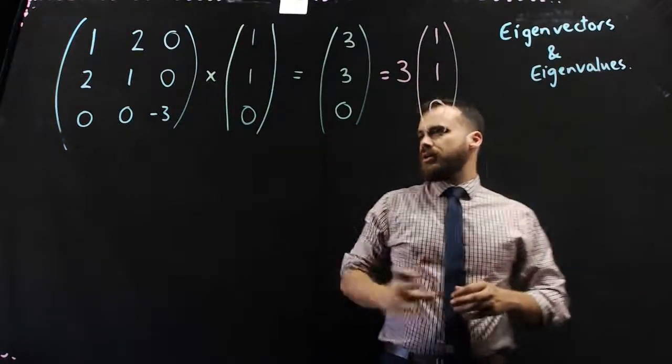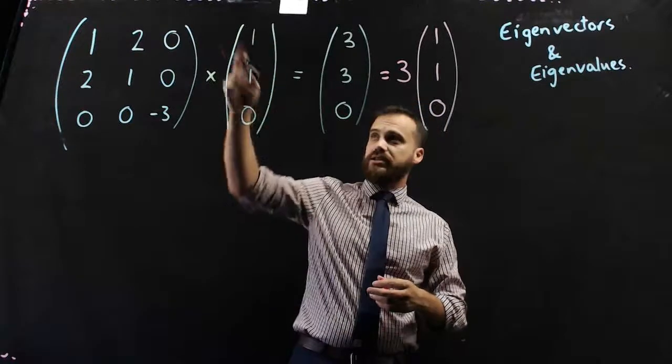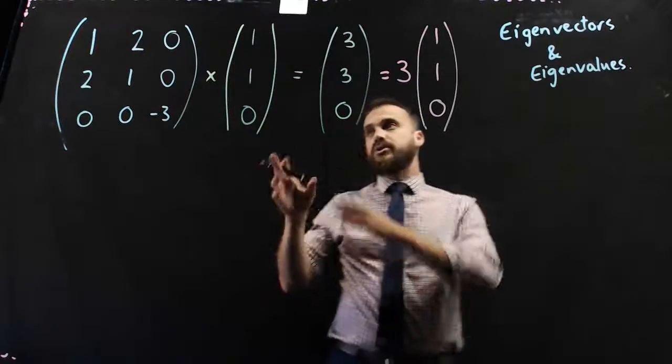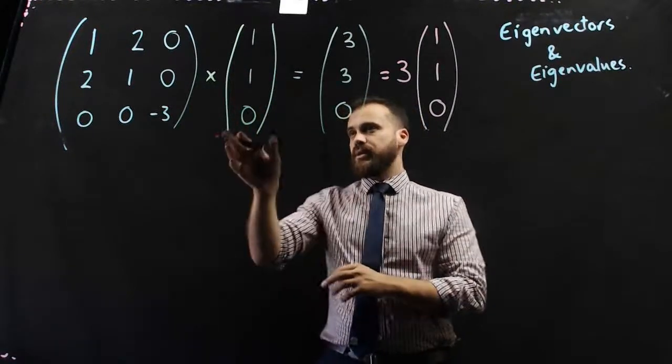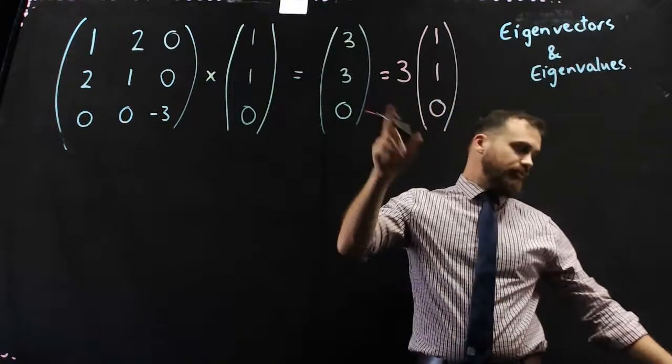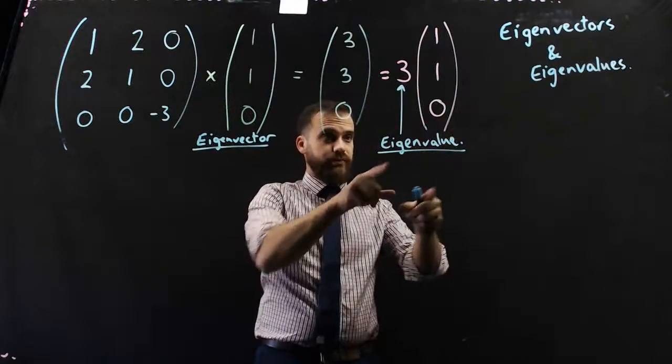All right, so this vector here, because remember, this is another way to write a vector, x, y, z, this vector here is what's called an eigenvector. And this value here is what's called an eigenvalue. All right, so eigenvector, eigenvalue.